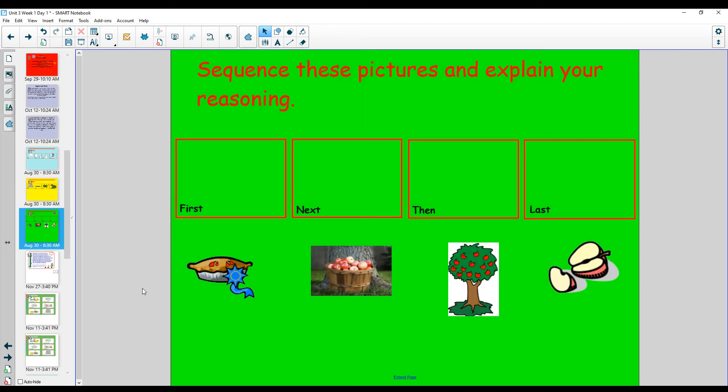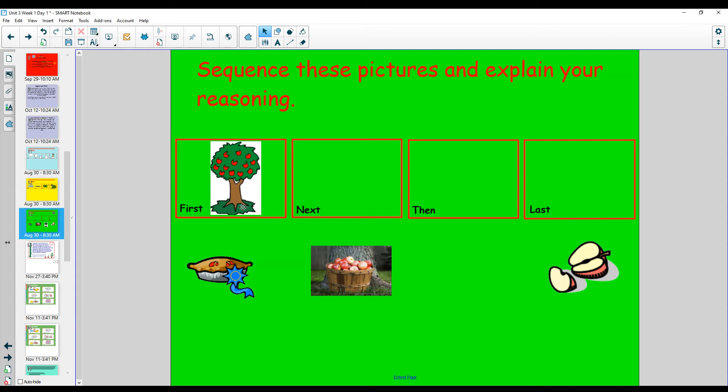Alright, last one to practice with pictures. What has to happen first? Well, first, the apples have to grow on the tree, which takes a long time. Next, we would gather up the apples and bring them home to our house.